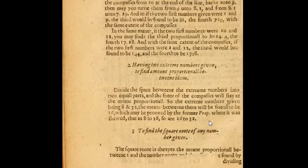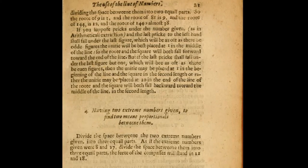The next part is finding the roots of numbers. The square root is always the mean proportional between 1 and the number given, found by dividing the space between them into two equal parts. The root of 9 is 3, and the root of 81 is 9. That makes perfect sense: just as 3 times 3 makes 9, if you split the log distance to 9 into two equal parts, dividing by 2 on a log scale gives you the square root.